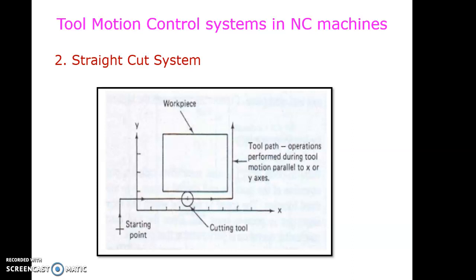The second type is the straight cut system. Here the tool moves parallel or perpendicular to any axis, and while moving, the tool cuts and removes unwanted material in the form of chips. The tool moves from one location to another, and during the movement itself material is removed. One key limitation is that it does not remove material in an angular direction — only parallel or perpendicular to the axis.